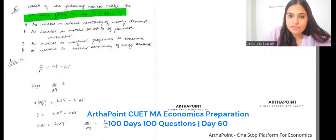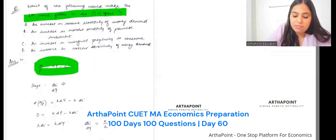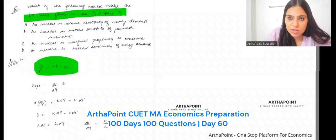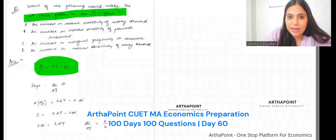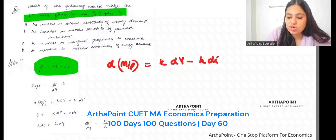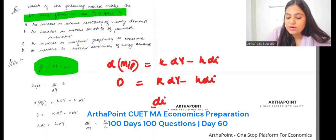Write down the equation of money market: M by P is equal to kY minus hI. Find dI by dY along the curve. M by P should be constant, so dM by P is equal to k dY minus h dI. Put this to 0: k dY minus h dI. Find dI by dY. It would be k by h.